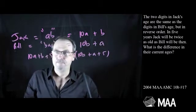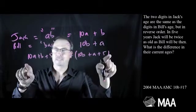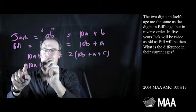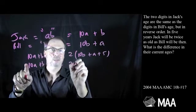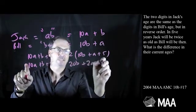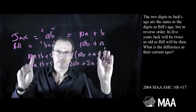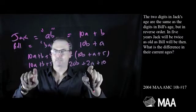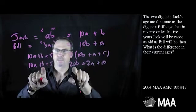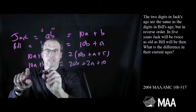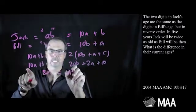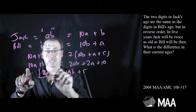All right, it just feels compelling to expand this out, so might as well do that. 10A plus B plus five equals 20B plus 2A plus ten. Knowing me, I probably made a mistake right there. Well, let's subtract 2A from both sides and 1B and five. So what's it going to be? 8A equals 19B plus five. All right.